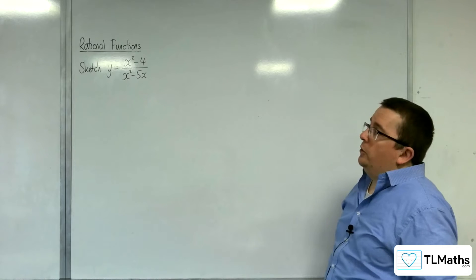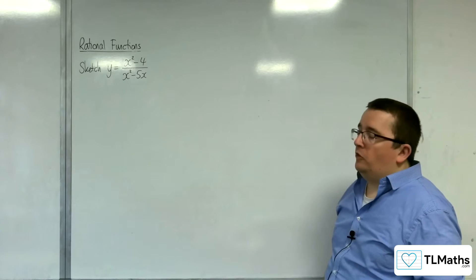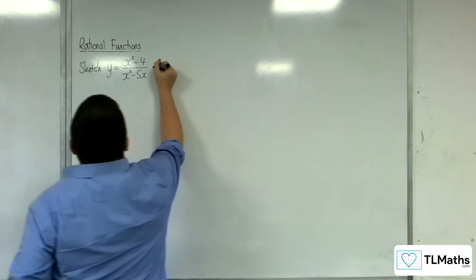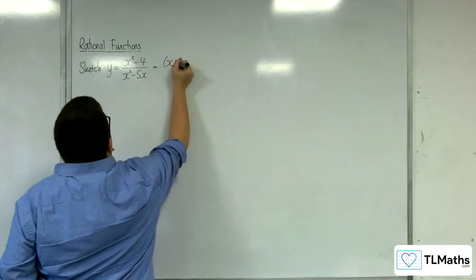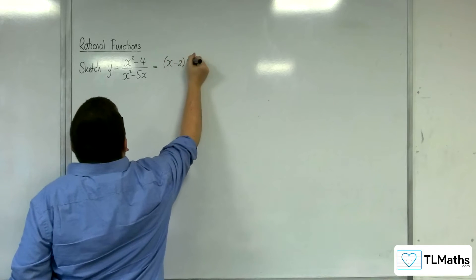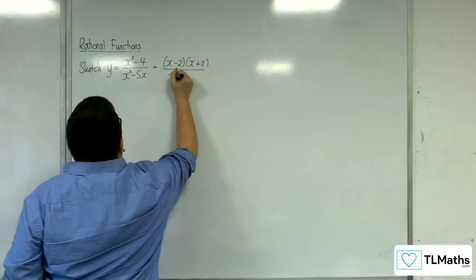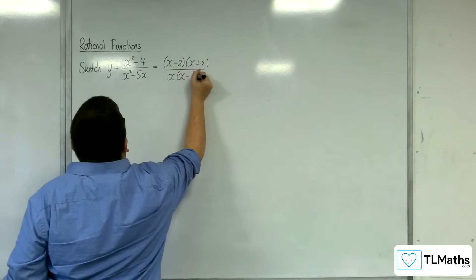This time we're going to be sketching y equals x squared minus 4 over x squared minus 5x. So let's see if we can factorize the numerator and denominator first. The numerator's a difference of two squares, so that's x minus 2 times x plus 2. And the denominator factorizes to x times x minus 5.